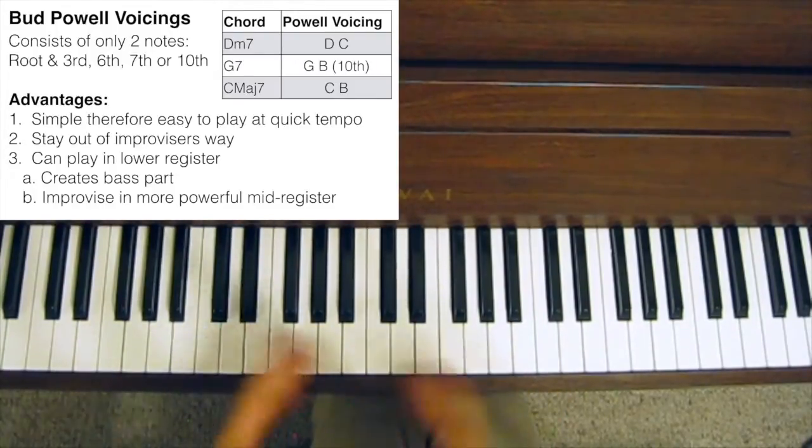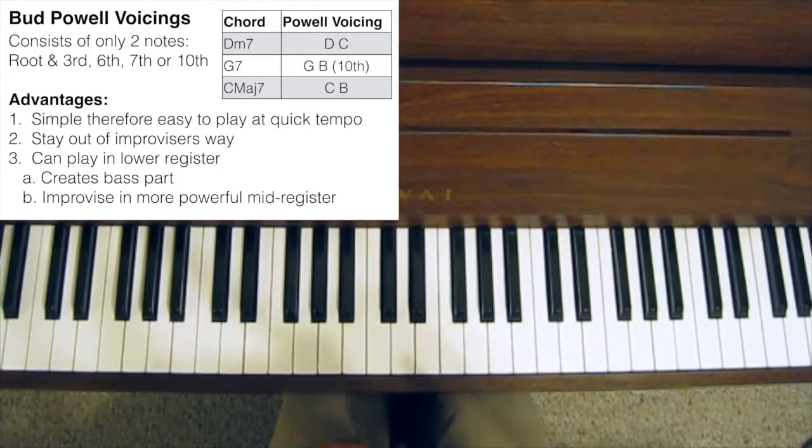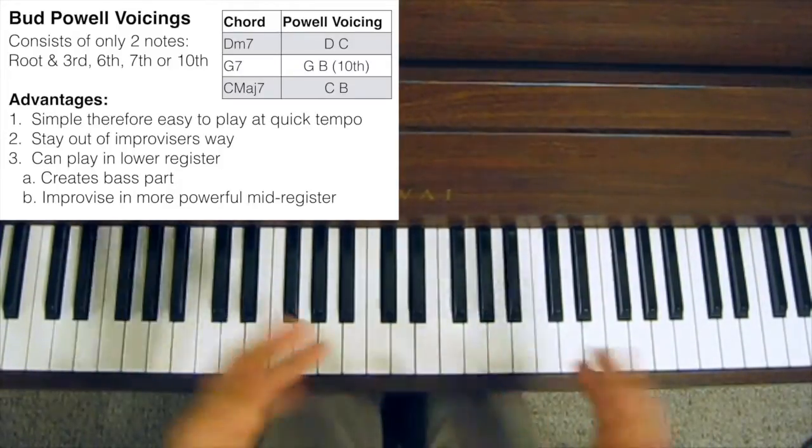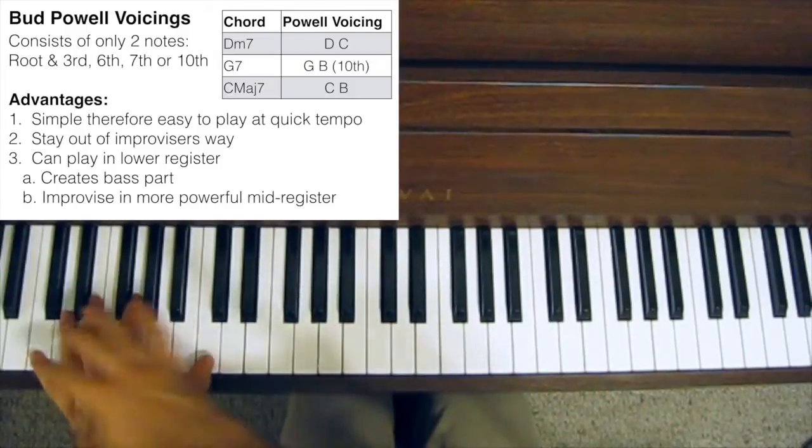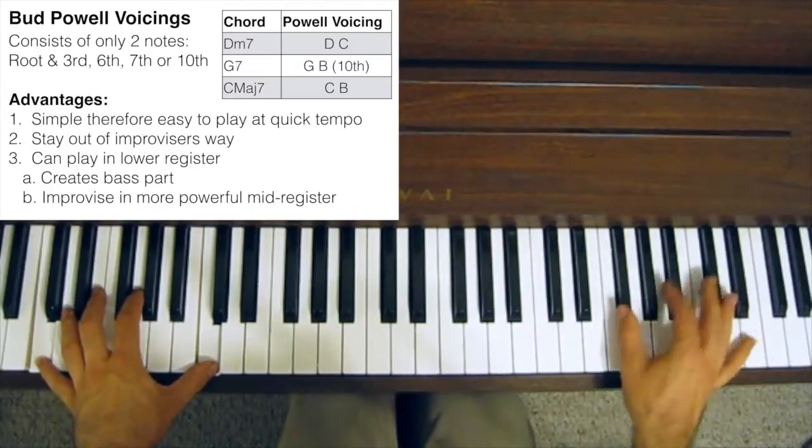And that essentially means two things in relation to this Bud Powell-style chord voicing. The first is that you get a much rounder, fuller tone, because you've got a bass part, and you can improvise in this register here, or even higher up.